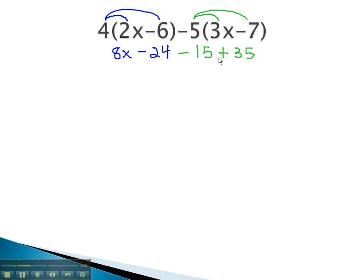Oops, I lost my x. Negative 5 times 3x is negative 15x, and a negative times a negative is a positive 35.